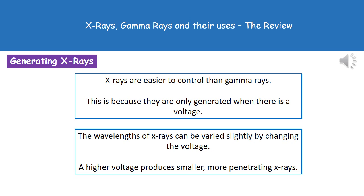Another difference between x-rays and gamma rays is how easy it is to control them. X-rays are far easier to control than gamma rays, because an x-ray is only generated when we supply a voltage — if we don't want to produce an x-ray, we just don't supply the voltage. However, gamma rays are produced by the radioactive decay of unstable nuclei, so we can't control that — it will just happen.